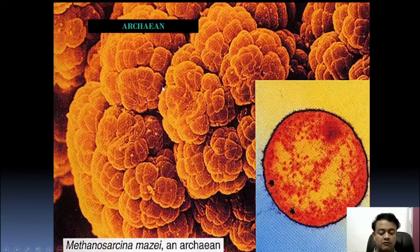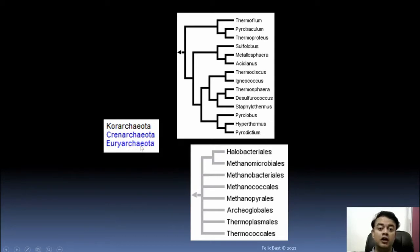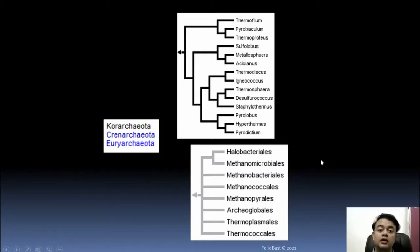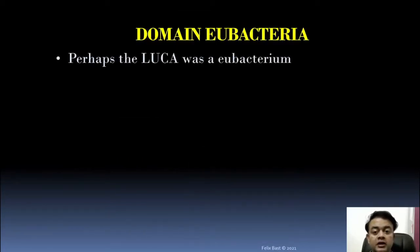Within Archaea there are three main subgroup classifications: Core Archaea, Crenarchaeota, and Uriarchaeota, with various divisions within them. Famous genera include Thermus and Methanosarciniae, and Sulfolobus is another famous genus of Archaebacteria.